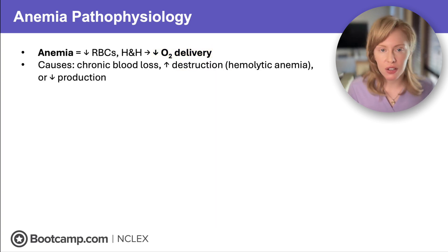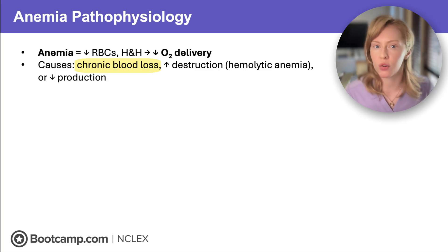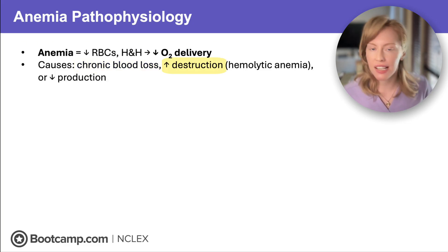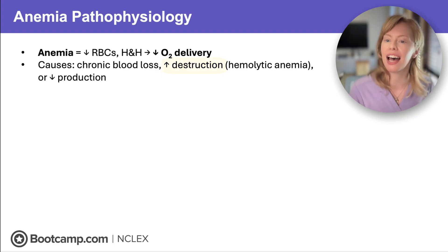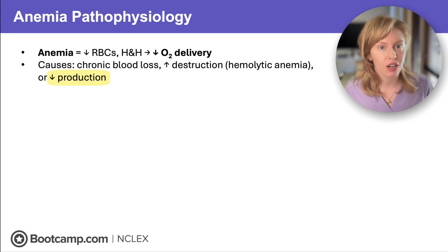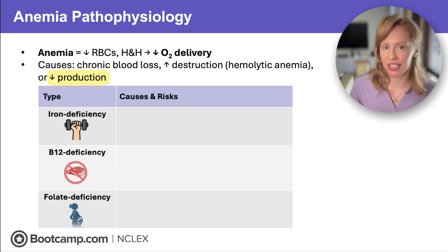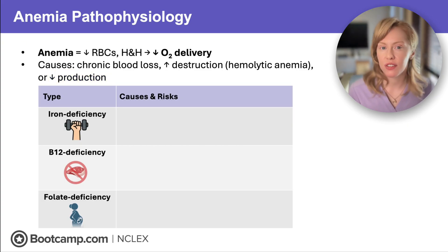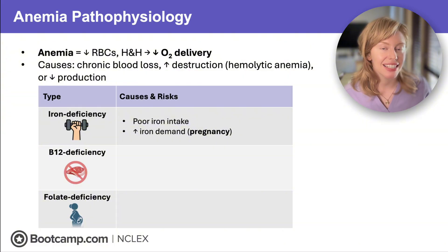Anemia can be caused by a number of different things, like chronic blood loss — that might be a slow GI bleed — increased destruction of the blood cells like in hemolytic or sickle cell anemia, or a decreased production of blood cells, commonly from nutritional deficiency anemias like iron, B12, or folate deficiency.